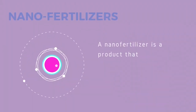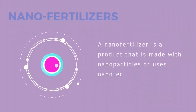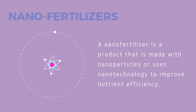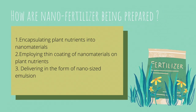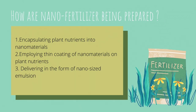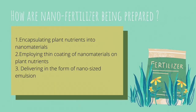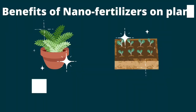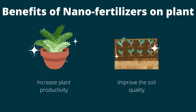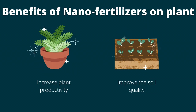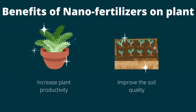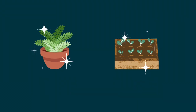First and foremost, we have nanofertilizers. A nanofertilizer is a product that is made from nanoparticles to improve nutrient efficiency. Nanofertilizers are prepared by encapsulating plant nutrients into nanomaterials, employing a thin coating of nanomaterials on plant nutrients to be delivered in nano-sized emulsion. Nanofertilizers can improve crop productivity by enhancing the rate of growth activity, and can also improve soil quality by increasing fertilizer nutrient availability in soil.